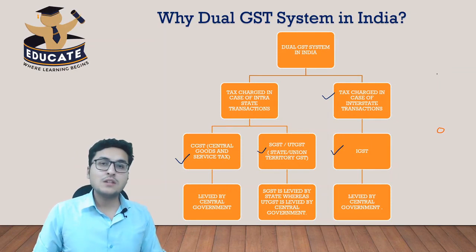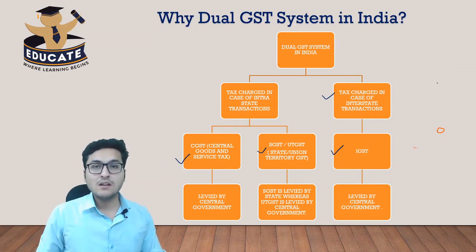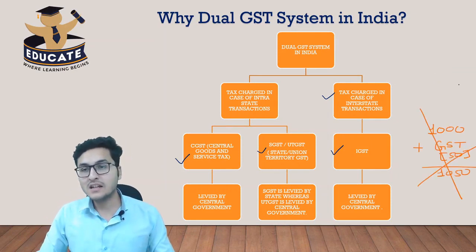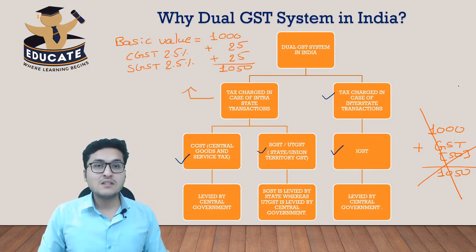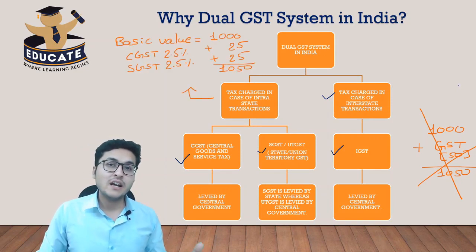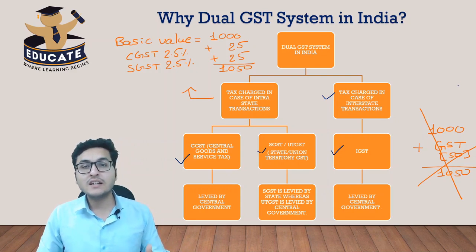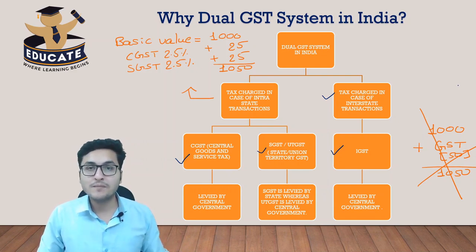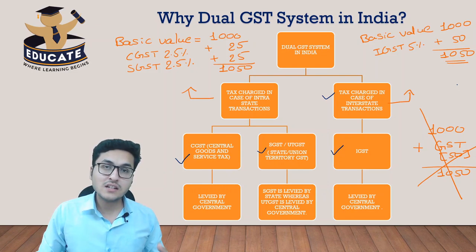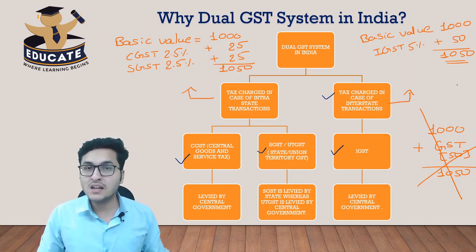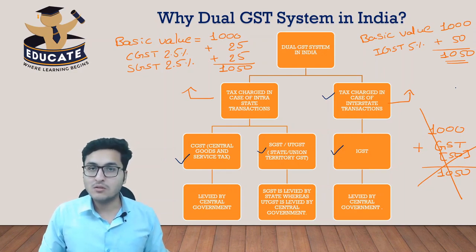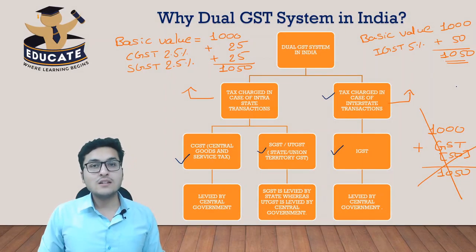In the previous lecture we ended up with some queries: why can't we just charge a single GST and be done with transactions? Why is the central government charging CGST separately and why is the state government collecting SGST separately? Why in case of interstate transactions is only IGST charged and the whole amount collected by the central government? I will answer all these queries in today's session.